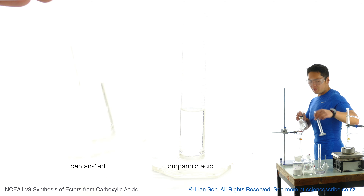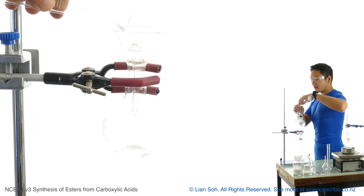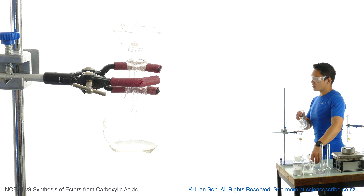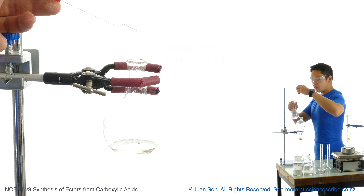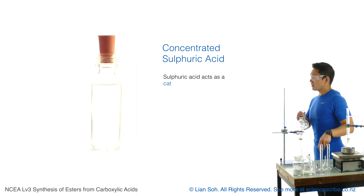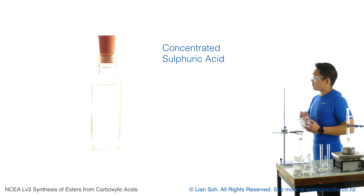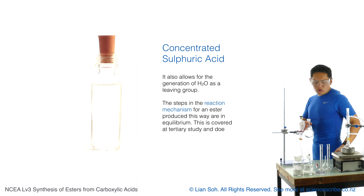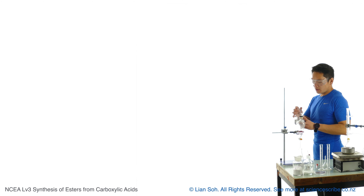Pentan-1-ol and propanoic acid are both colourless liquids, and when I add these two to the flask, it doesn't look like anything's happening. I'm also going to add just a small amount of concentrated sulfuric acid. The whole point is to drive the reaction forward so that I produce more ester product and increase my yield. It does that because water is produced on the product side, and the concentrated sulfuric acid helps remove the water, pushing the equilibrium forward.